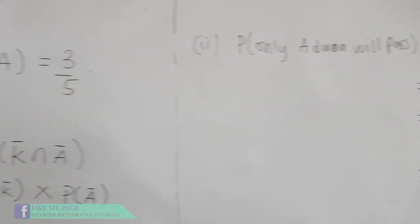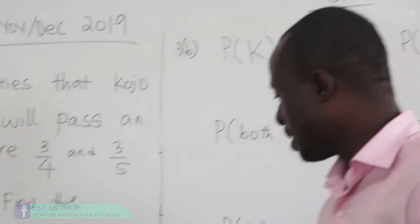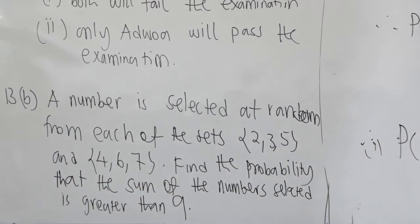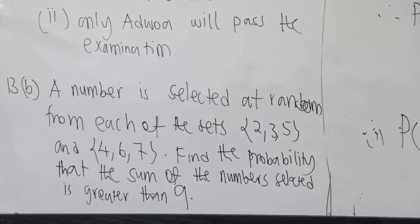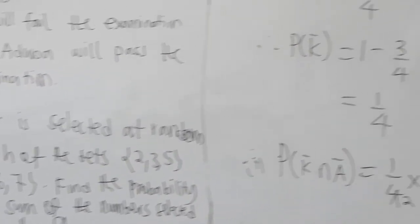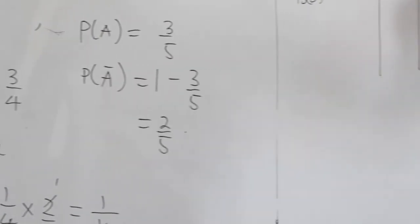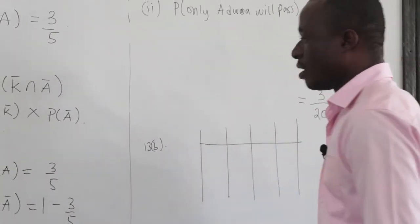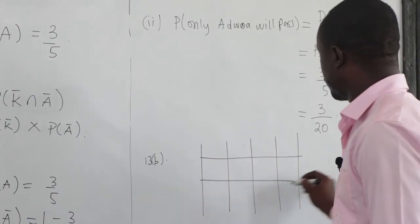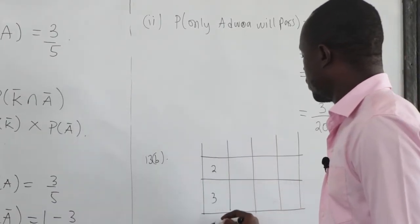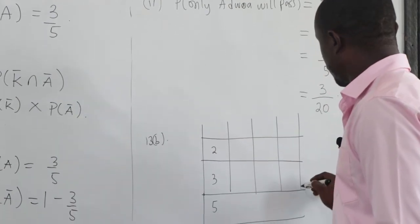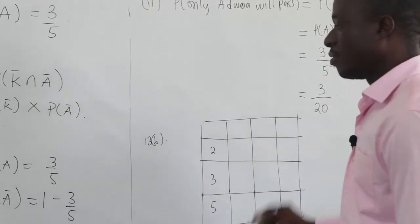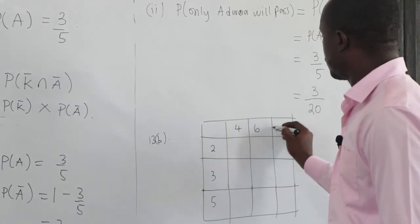Now let's see question number 13B. It says that a number is selected at random from each of the sets: {2, 3, 5} and {4, 6, 7}. Find the probability that the sum of the numbers selected is greater than 9. To solve this, we need to create a table. The first set is 2, 3, 5 and the other set is 4, 6, 7.